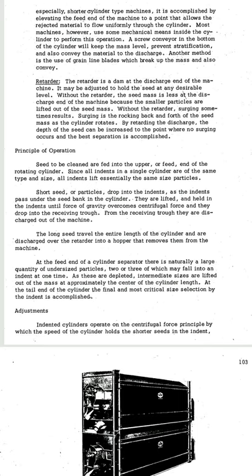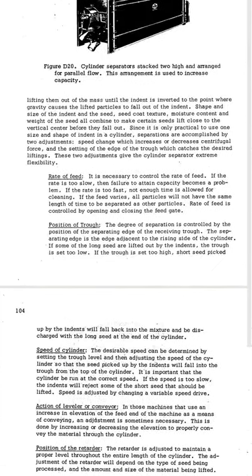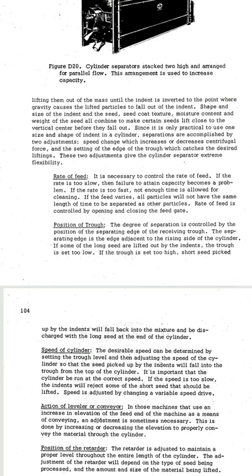The important adjustments in the cylinder separator: the indented cylinder operates on the centrifugal force principle, by which the speed of the cylinder holds the shorter seeds in the indents, lifting them out of the mass until the indent is inverted to the point where gravity causes the lifted particles to fall out. Since it is only practical to use one size and shape of indents in a cylinder, separations are accomplished by two adjustments: speed change, which increases or decreases centrifugal force, and the setting of the edge of the trough which catches the desired liftings. These two adjustments give a cylinder separator extreme flexibility.